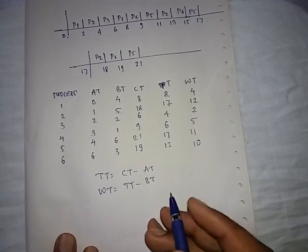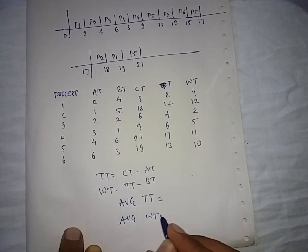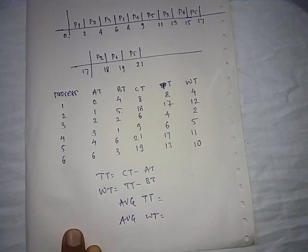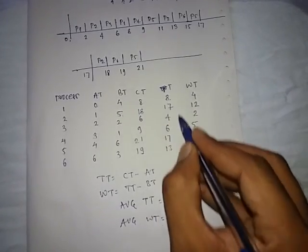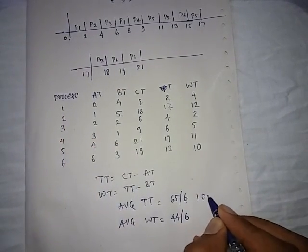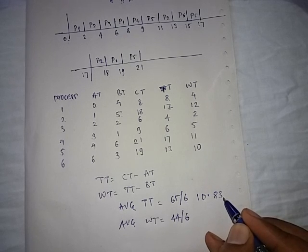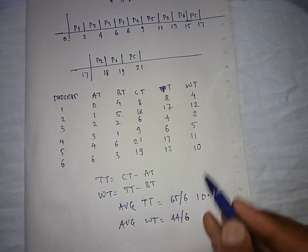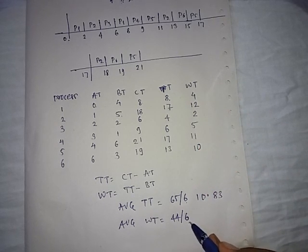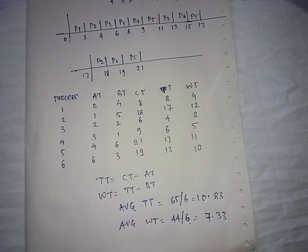You have to find average turnaround time and average waiting time. Average turnaround time is calculated from this column. The addition of this column is 65 divided by total number of processes, that is 6. The answer is about 10.83. Average waiting time is calculated from the waiting time column. The addition is 44 and total processes is 6, so the answer is about 7.33.